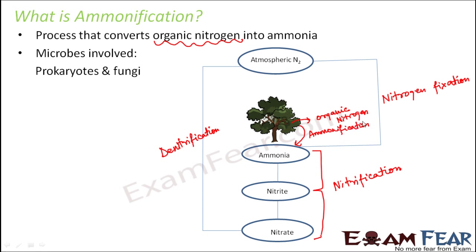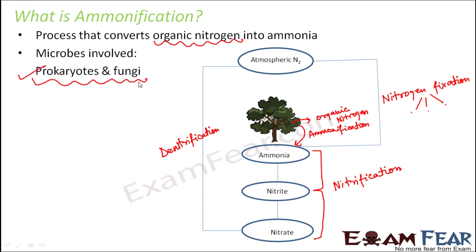Now who does ammonification? Let's see who does each of these processes. Nitrogen fixation can happen by three processes: industrial, atmospheric, and biological. Biological occurs with the help of symbiotic bacteria present in the root nodules of leguminous plants. Nitrification happens again by prokaryotes. When you talk about ammonification, the microbes involved are also prokaryotes — that is bacteria and fungi. Bacteria and fungi both help in the decomposition of the tissue, and therefore during the course of ammonification, the organic nitrogen gets converted to inorganic nitrogen.